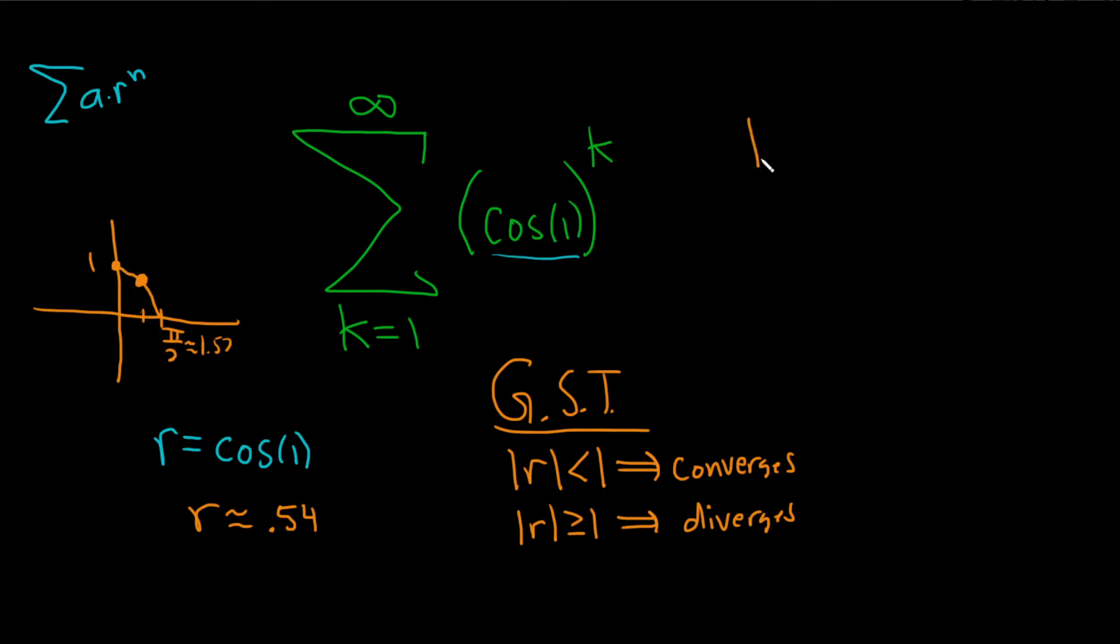So if we take the absolute value of r, we're taking the absolute value of cosine of 1, which is just cosine of 1 (it's a positive number), and it's less than 1. So our series converges by the geometric series test.